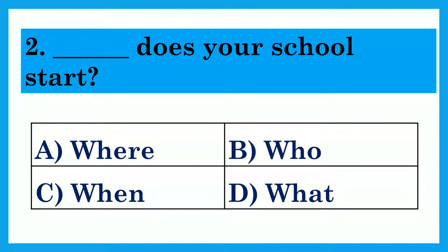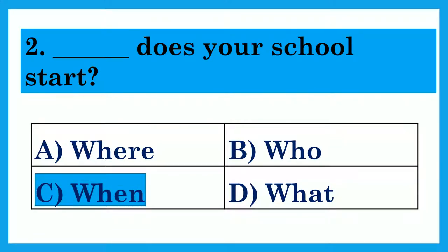Dash does your school start? Option A: Where? Option B: Who? Option C: When? Option D: What? The answer is 'When' — When does your school start is the right option.